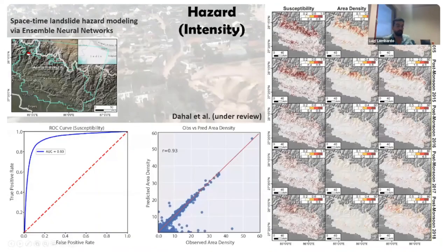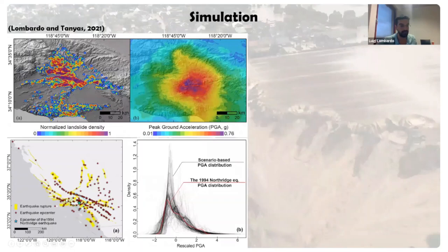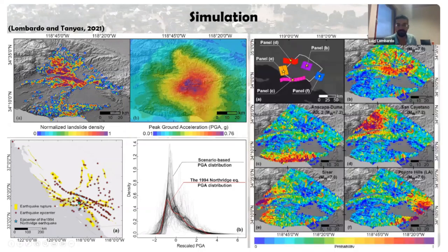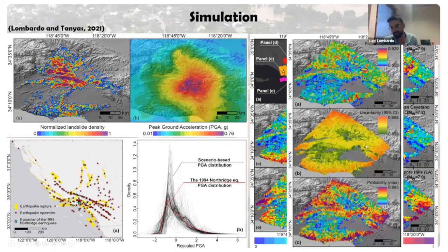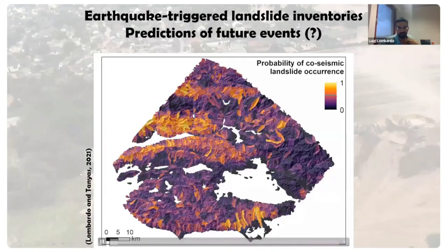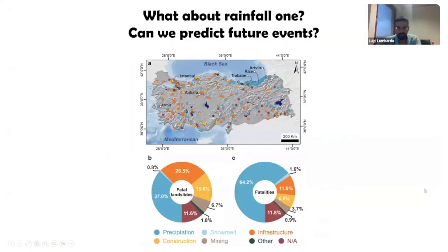Beyond that, even here we're just looking at past events. We are trying to train models on the past and then use simulations — in this case earthquake simulations — to predict what would be the probability pattern in time if a given ground motion map corresponded to a different rupture, a different earthquake. These scenarios are easy to generate from USGS. You can obtain temporal summaries, such as the maximum probabilities across all these simulations.